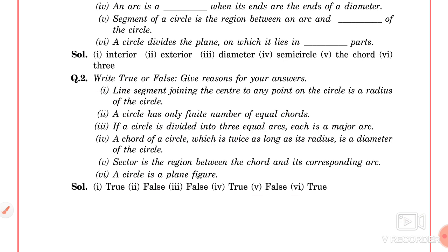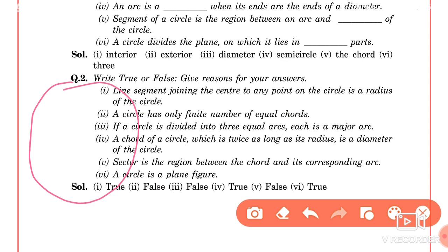Next one is: A chord of a circle which is twice as long as its radius is the diameter of the circle. Okay, let's have a circle. In this one we draw a chord which is the radius. So definitely that chord will be the diameter. So this is a true statement.